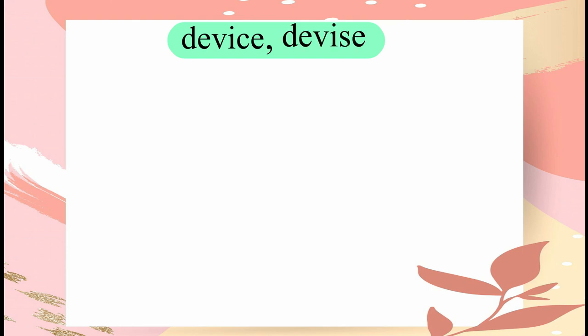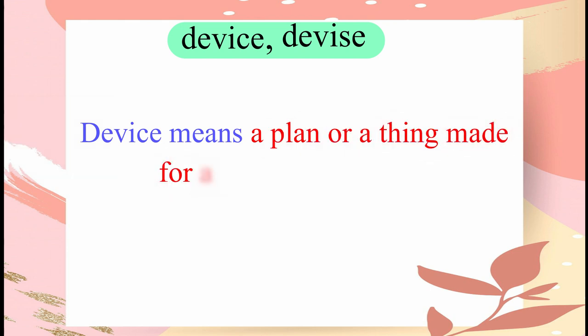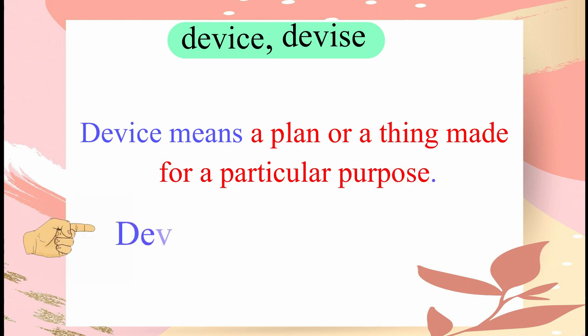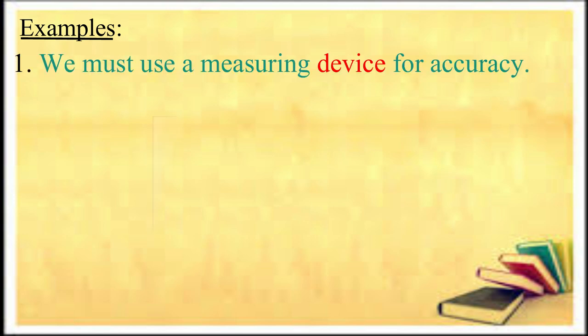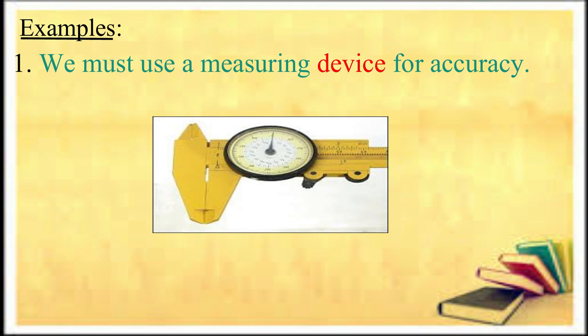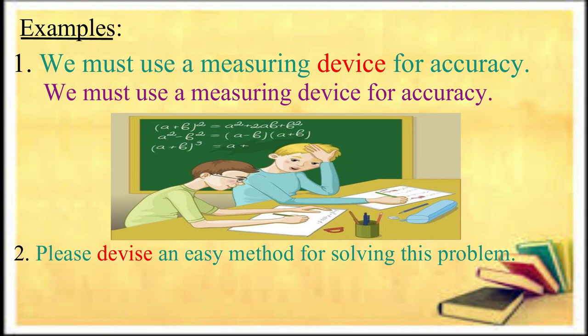DEVICE and DEVISE are our next set of words. DEVICE means a plan or a thing made for a particular purpose, while DEVISE means to work out. We must use a measuring device for accuracy. Please devise an easy method for solving this problem.